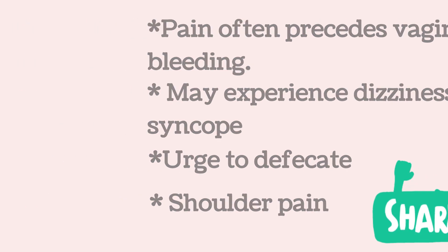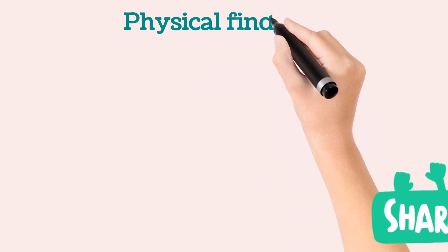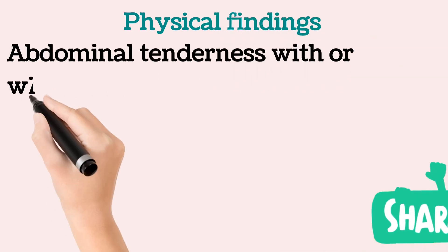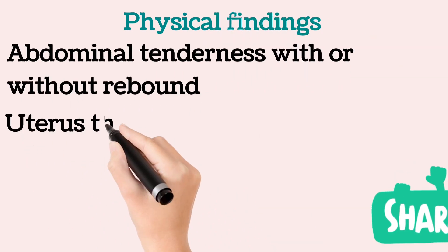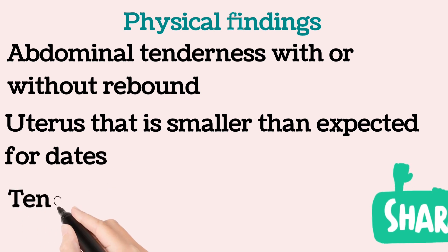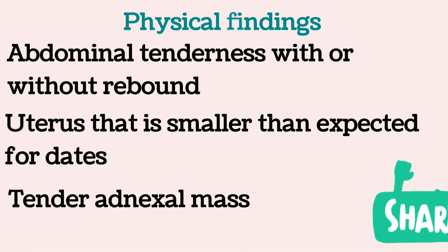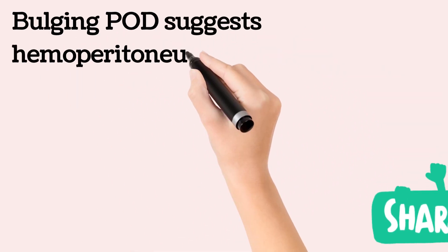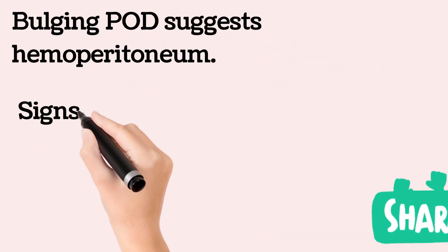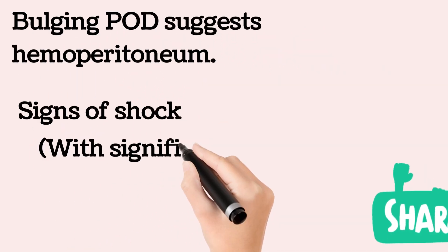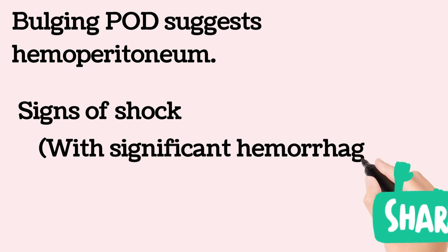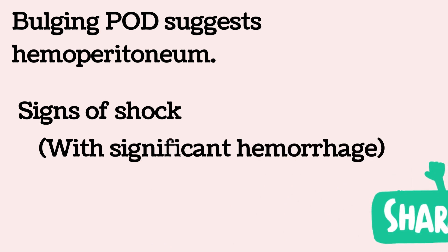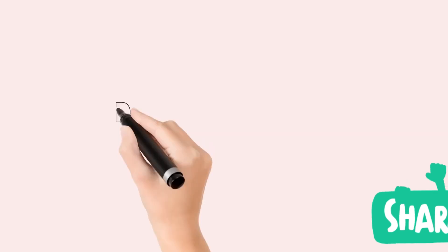Physical findings include abdominal tenderness with or without rebound, a uterus smaller than expected for dates, a tender adnexal mass, and a bulging pouch of Douglas suggesting hemoperitoneum. With significant hemorrhage there may be signs of shock, but some patients may appear hemodynamically stable despite a hemoperitoneum of 1 to 1.5 litres of blood.